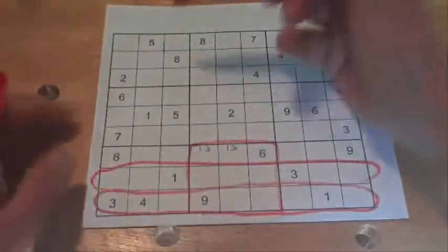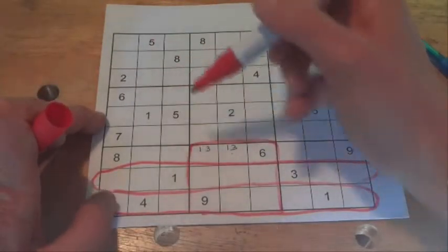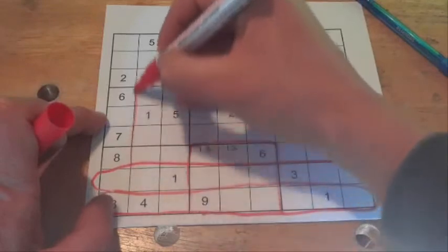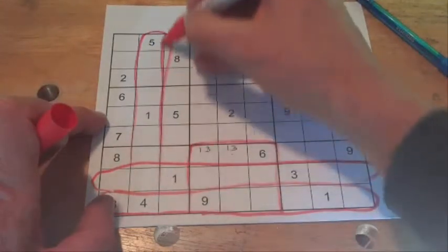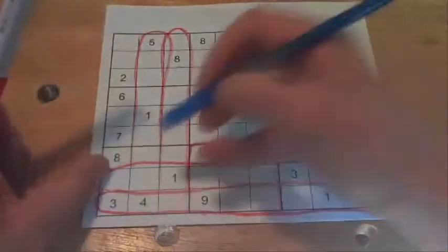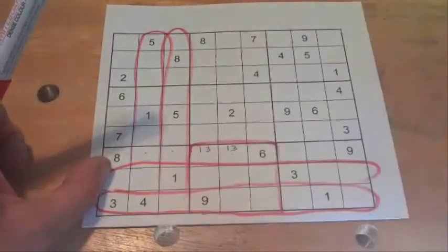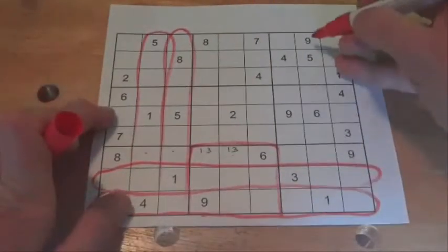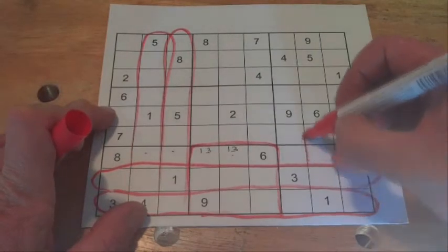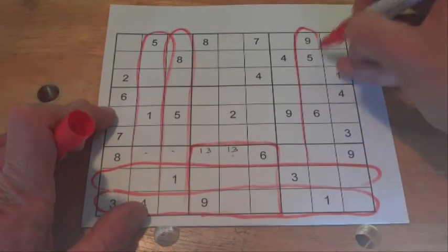So if we have a look up here, we've got 5 there and 5 there. That stops 5 appearing in either of those two columns, so we can't have a 5 there or there. And if we look over here on the right hand side, there's a 5 up the top there.